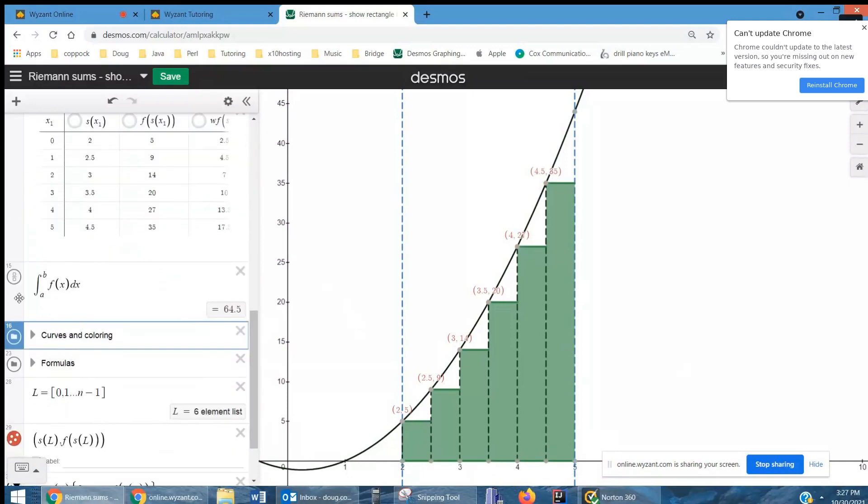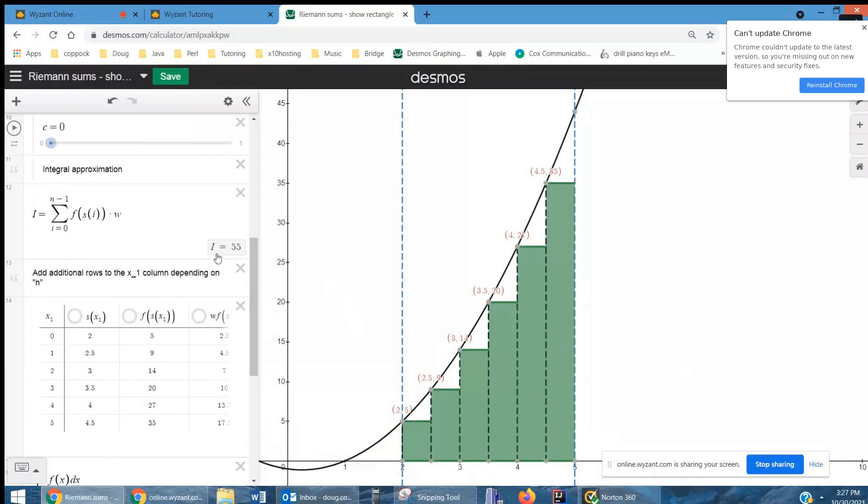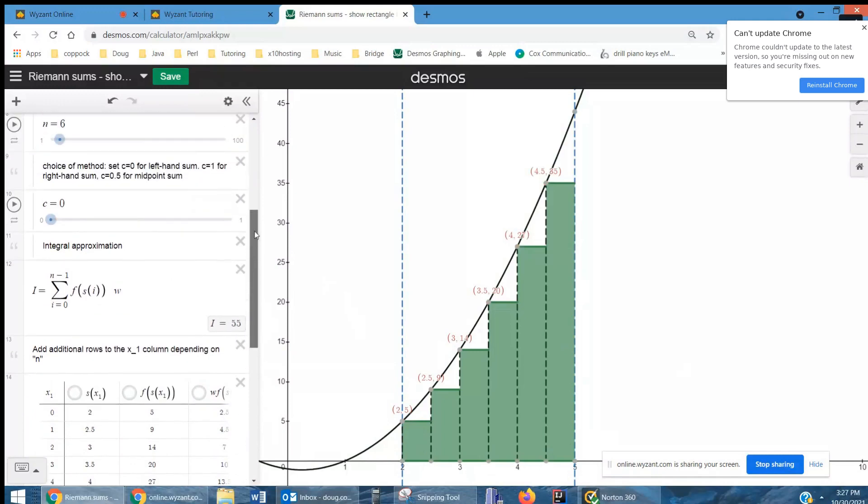And here we've got the actual area under the curve is 64.5. So you can see for six rectangles, we don't have a very good approximation.